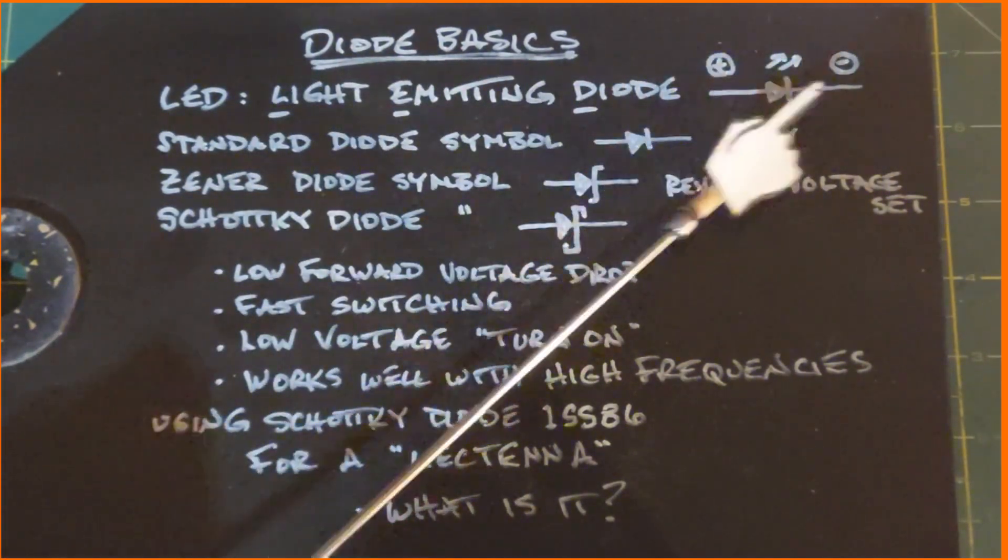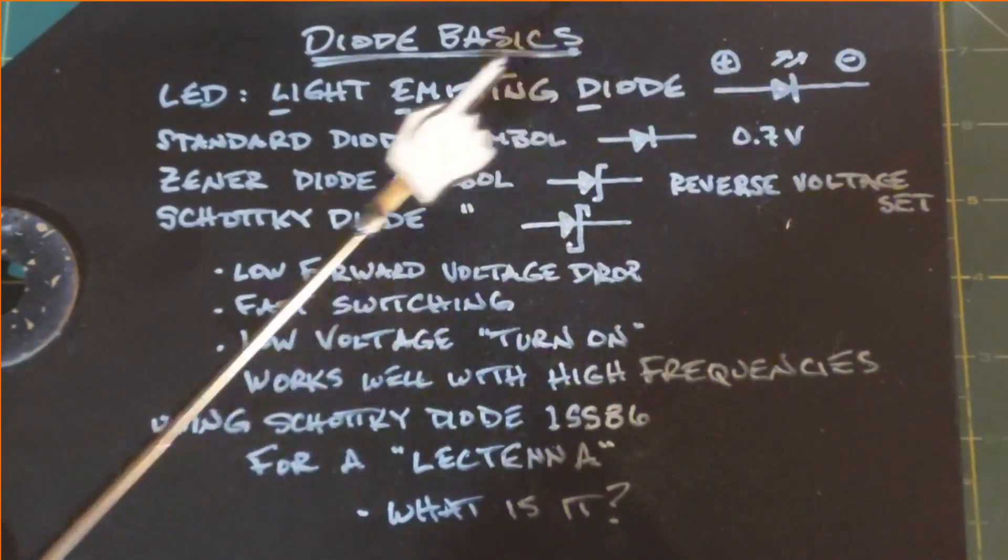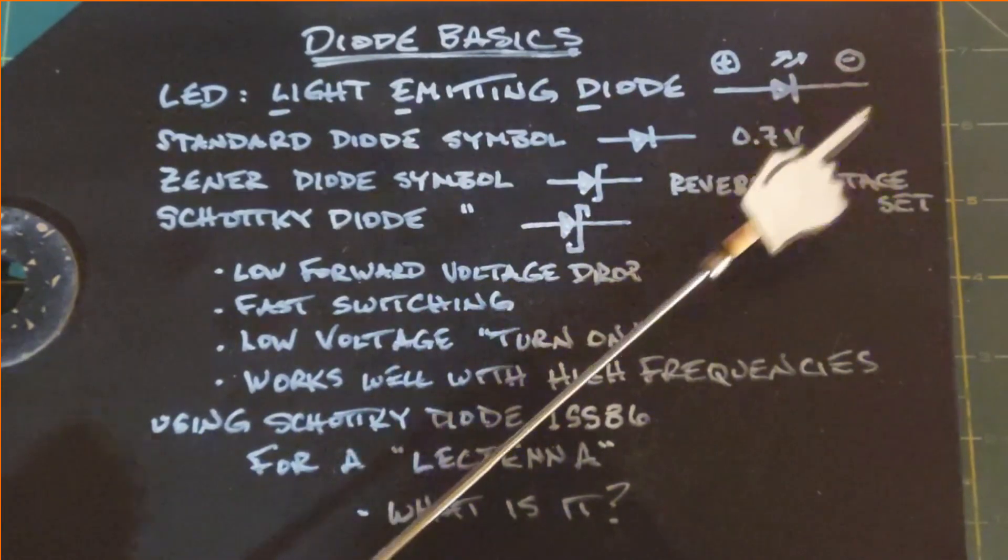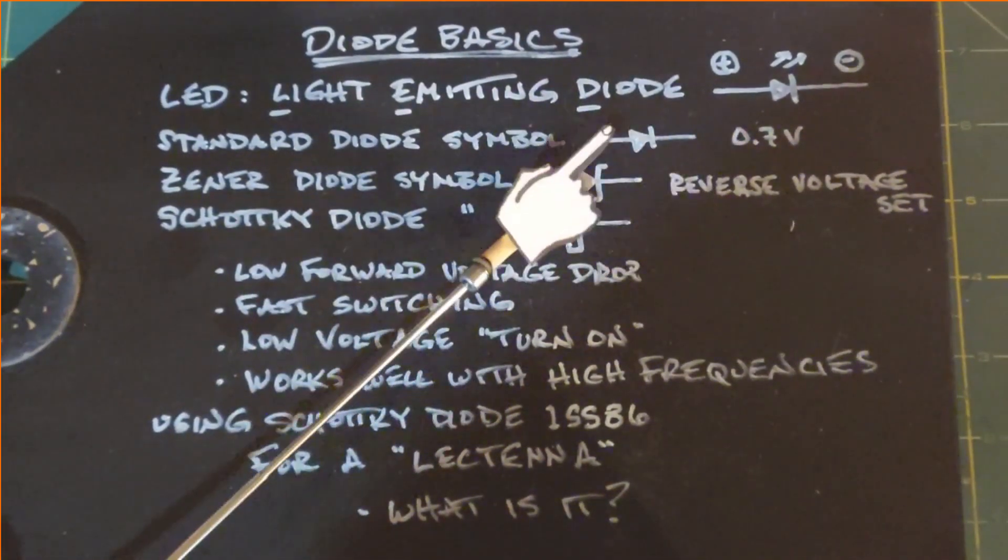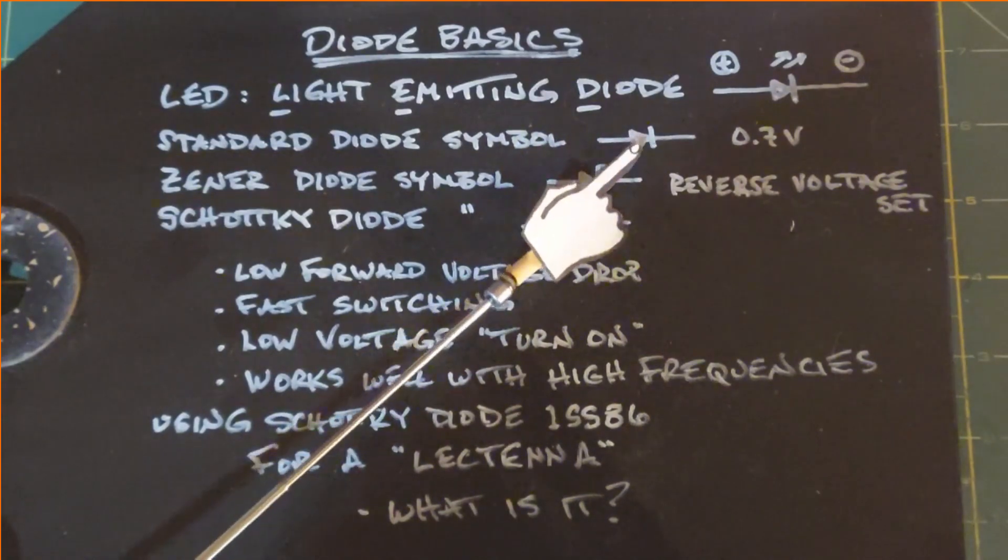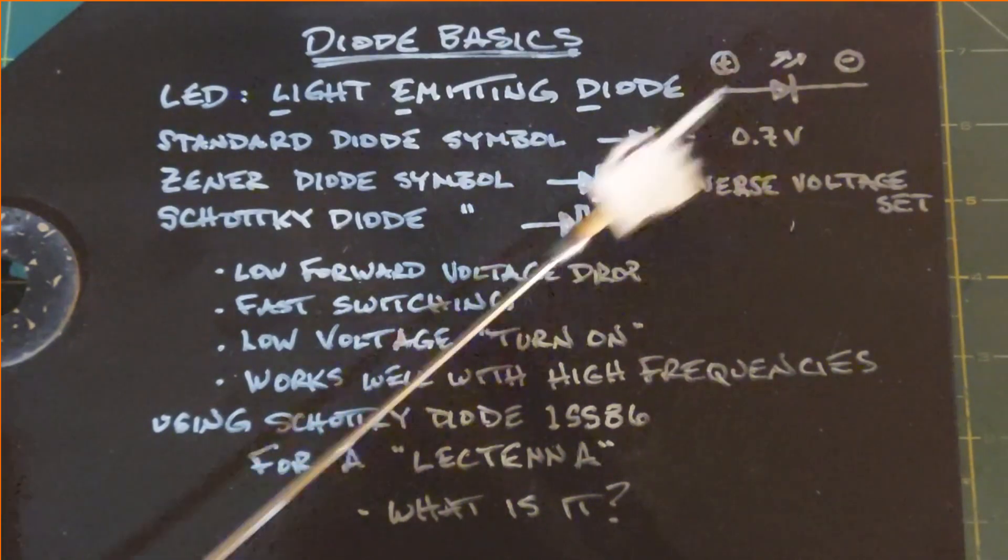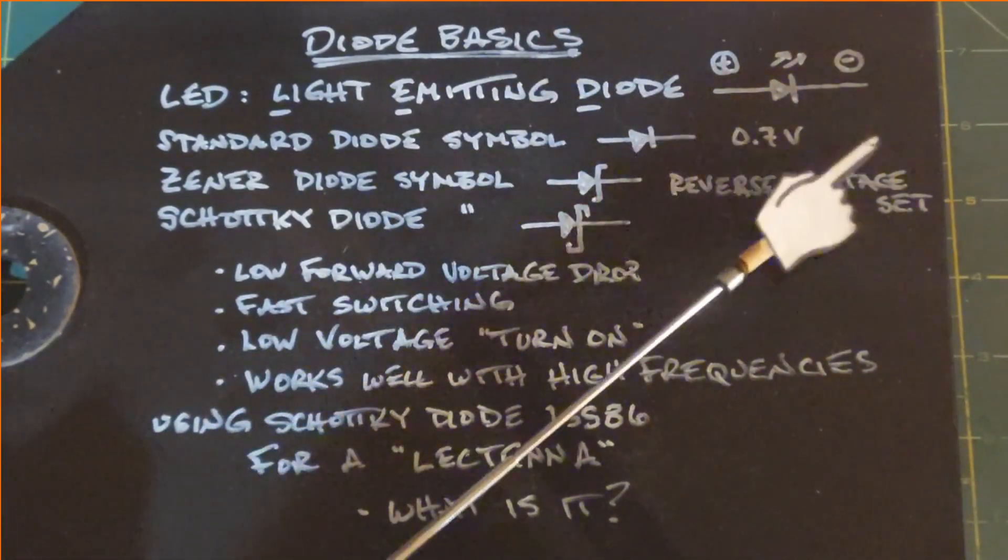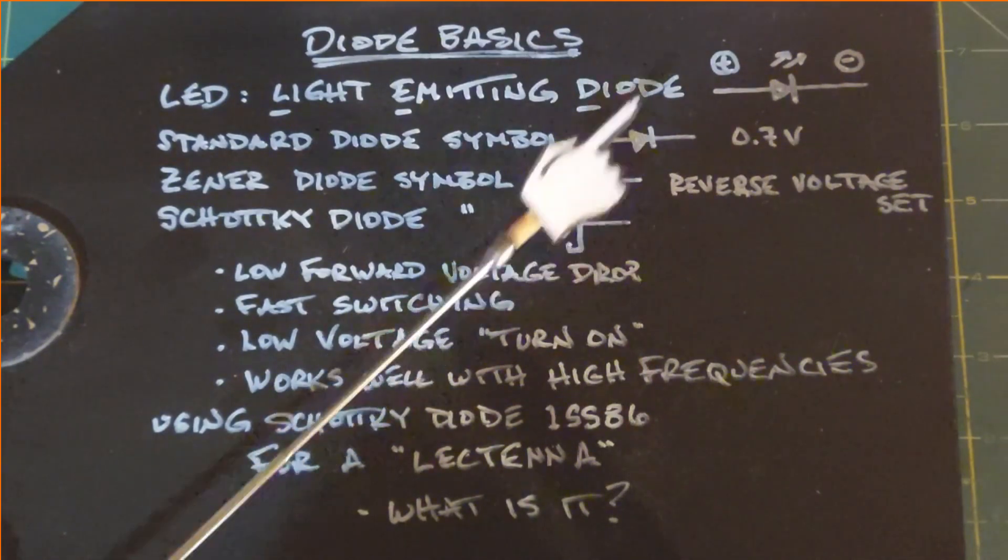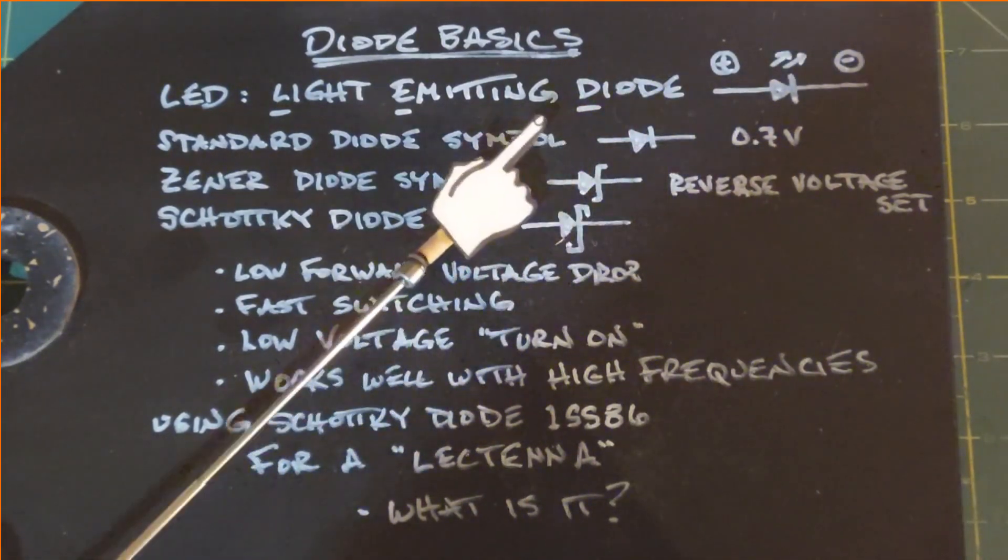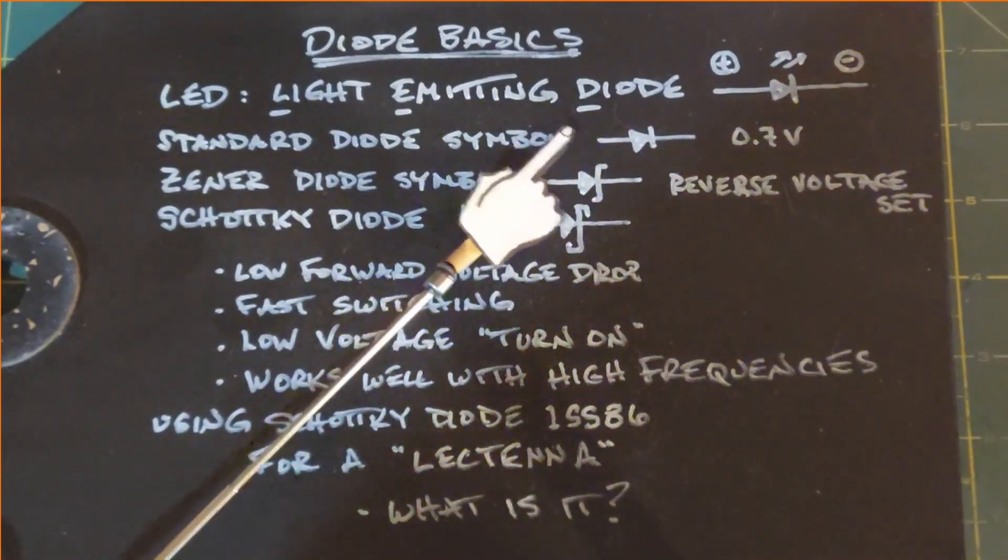When diodes are used, they're typically used, other than LEDs, to force current going in one direction. Here's our standard symbol again and the current is forced in the direction of the triangle here, so it looks like an arrow and you just follow that - that's the direction the current would go through the diode. If you try to go the opposite direction, this line represents like a wall, you can't do it. So diodes force current one direction without allowing it to go back the other way.